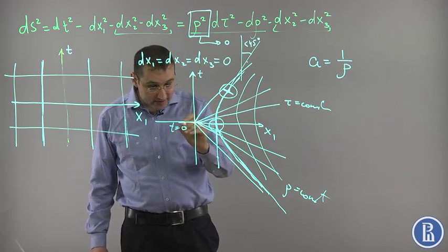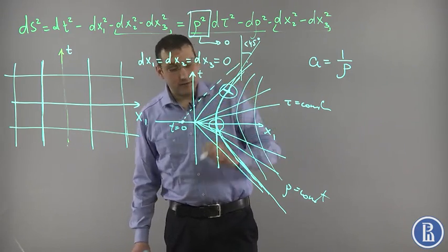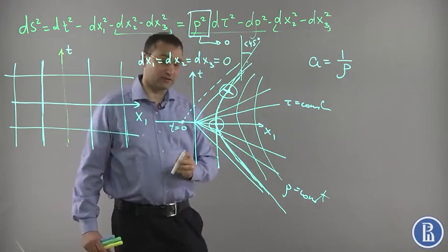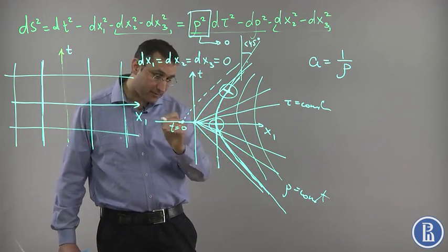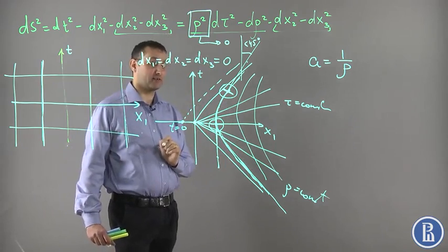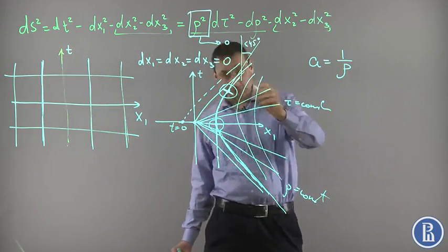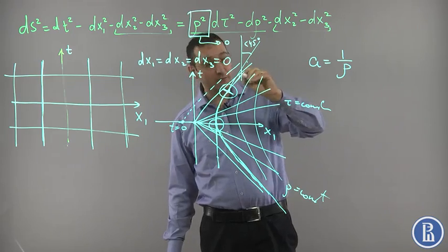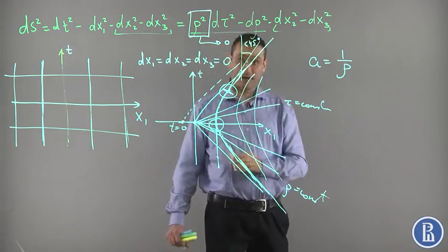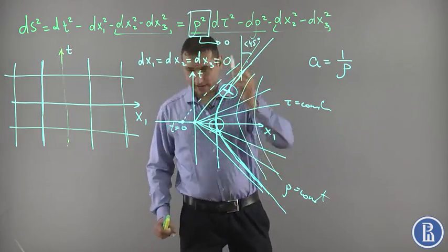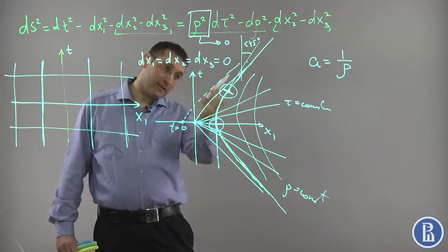What is important is that if someone decides at this moment of time t = 0 to emit a light ray which tries to catch up with you, this light ray is always parallel to the asymptote and never intersects with the hyperbola. It means that the light ray emitted from any point behind the asymptote never catches up with the eternally accelerated observer. But it does catch up with someone who stopped their acceleration at a finite moment of time.